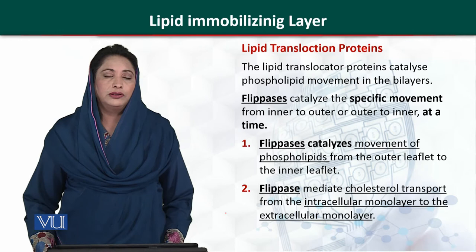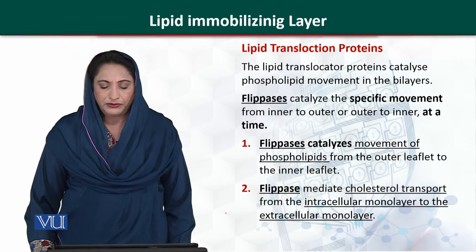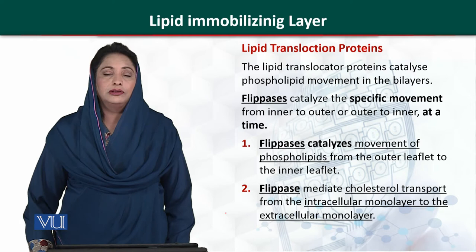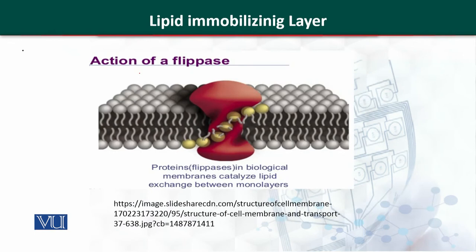For example, flippase facilitates movement from the inner side to the outside or from the outer side to the inner side. For phospholipids, flippase allows movement from the outer leaflet to the inner leaflet. Flippase also helps cholesterol molecules to move, transporting them from the intracellular monolayer to the extracellular monolayer. The flippase enzyme is shown in red in this slide, with the phosphate head shown in gray and the lipid bilayer shown here. The flippase embedded in the membrane changes the direction of the phospholipids — moving the phosphate group from the outer side to the inner side. Flippase proteins in the biological membrane catalyze the lipid exchange between the monolayers.